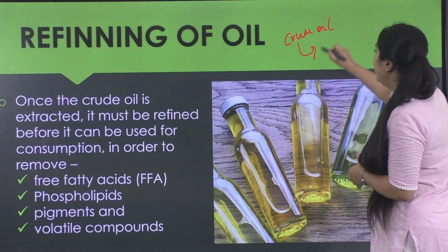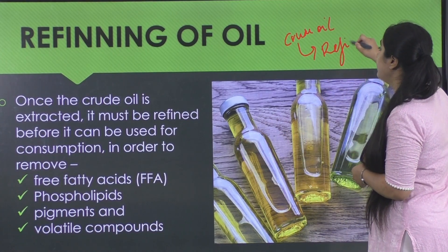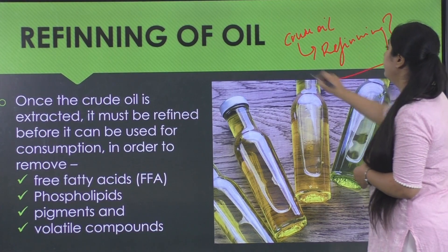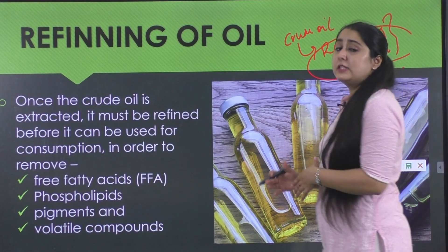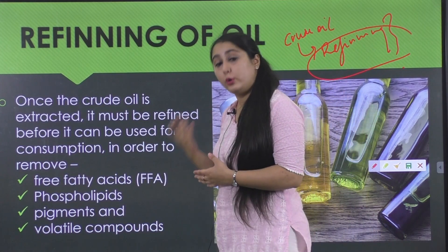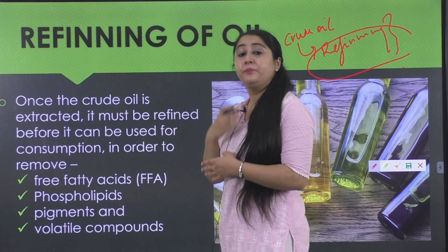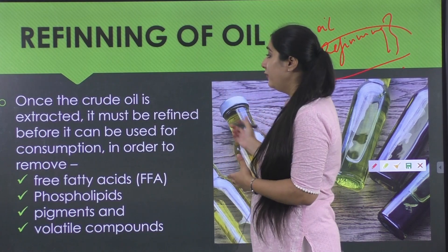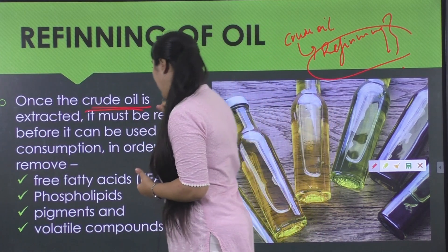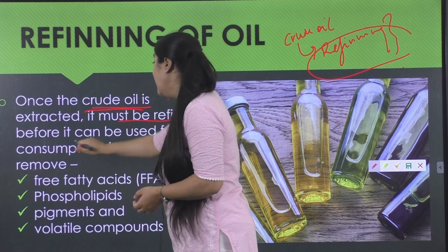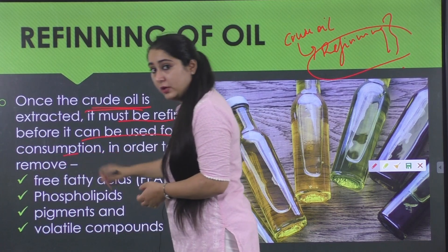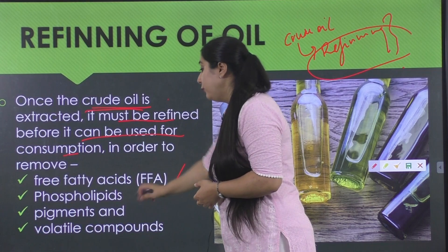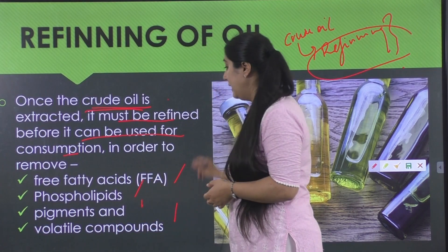For the process, we have to undergo a refining process for this crude oil so that it can be rendered fit for consumption — free from any off odor, any off flavor, taste, or color. Once the crude oil has been extracted, we have to refine it before it can be used for consumption, in order to remove the free fatty acids, phospholipids, pigments, and volatile components.